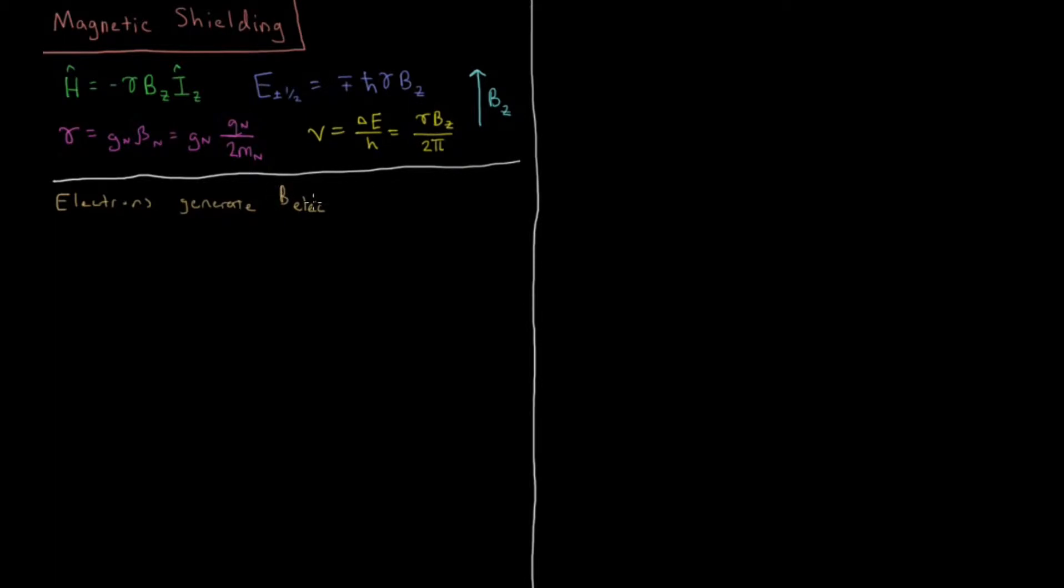They're going to generate an electronic magnetic field B-elec here and this is going to oppose the direction of B-naught of our standard magnetic field. So if we have our BZ acting in the plus Z direction then our B-elec is going to go in the opposite direction. It's going to oppose whatever direction our default magnetic field is.